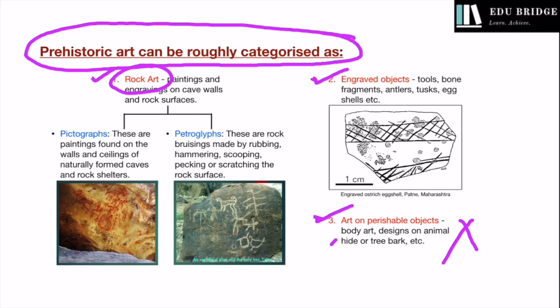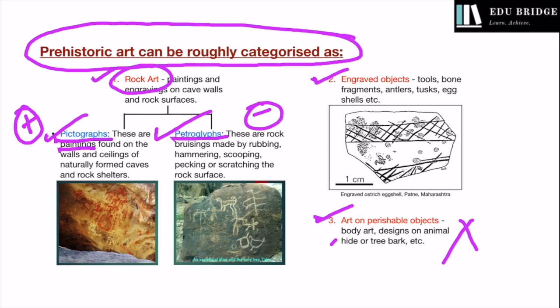Coming back to rock art, it can be categorized into two types: pictographs and petroglyphs. Pictographs are paintings on cave walls and ceilings — these are the result of the process of addition or accretion on the rock surface, where paint or pigment was applied. Petroglyphs, on the other hand, are engravings — the result of the process of subtraction or erosion from the rock surface. Through the process of scooping, scratching, hammering, and pecking using a hard object, probably a hard stone tool, marks were made on the rock surface.